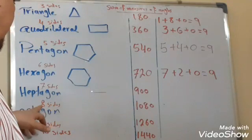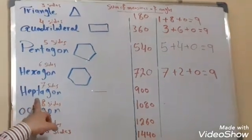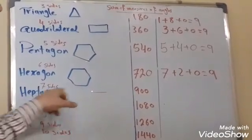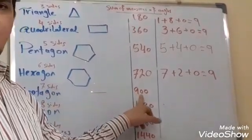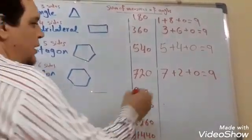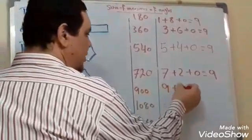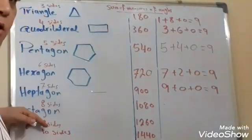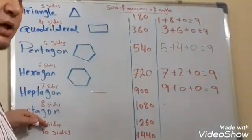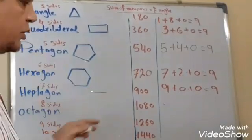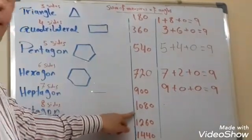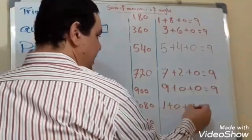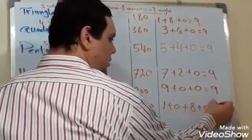After that, the polygon which has seven sides — the measure of all angles is 900. If we add: 9 plus 0 plus 0 equals also nine. After that, the octagon which has eight sides — the measure of all angles in the octagon is 1080. When we add: 1 plus 0 plus 8 plus 0 equals also nine.